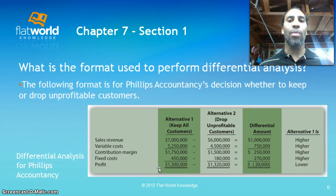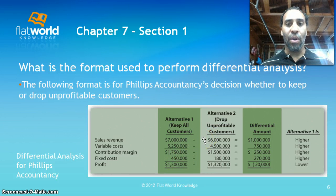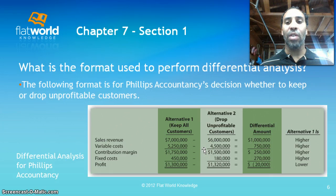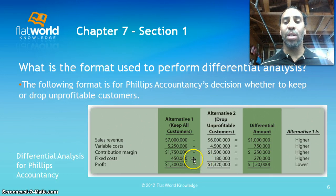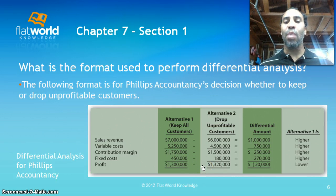Fixed cost is $450,000, so the profit if you keep all customers is $1,300,000. Alternative two is to drop the unprofitable customer — sales revenue goes down to $6 million, variable cost goes down to $4,500,000 because you have fewer costs without that customer, so the contribution margin drops to $1,500,000. Fixed cost is now only $180,000, much lower than $450,000, and total profit is $1,320,000.